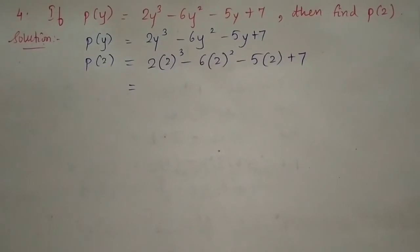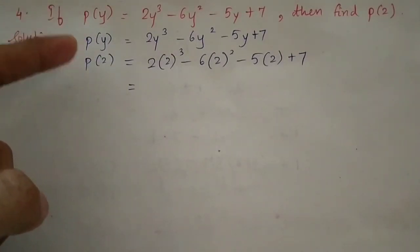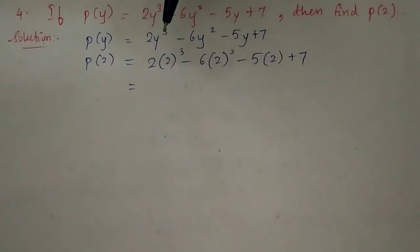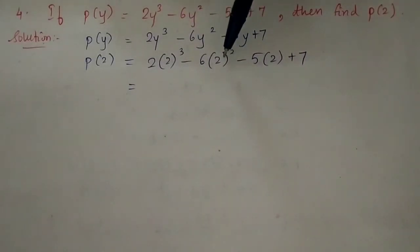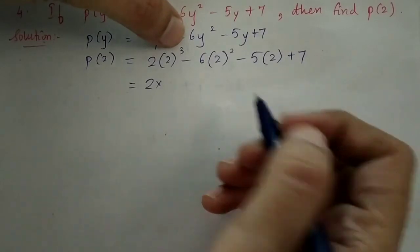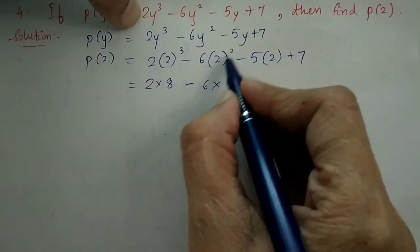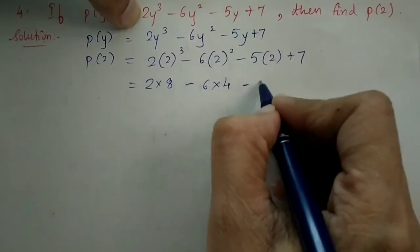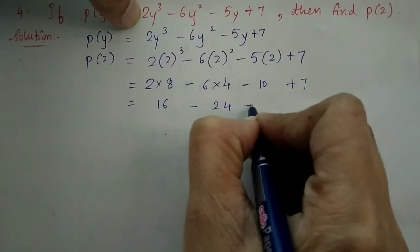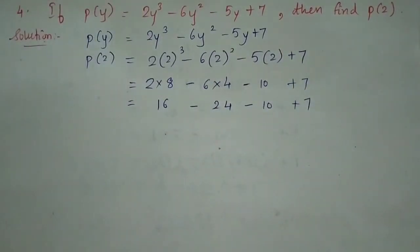In the last question, we need to find p(2) for a given polynomial in y. First I write the polynomial, then substitute y equal to 2. In place of y I write 2: so 2 cubed minus 6 times 2 squared minus 5 times 2 plus 7. Now, 2 cubed is 8, 2 squared is 4, so this becomes 8 minus 6 times 4 minus 5 times 2 plus 7, giving 8 minus 24 minus 10 plus 7.